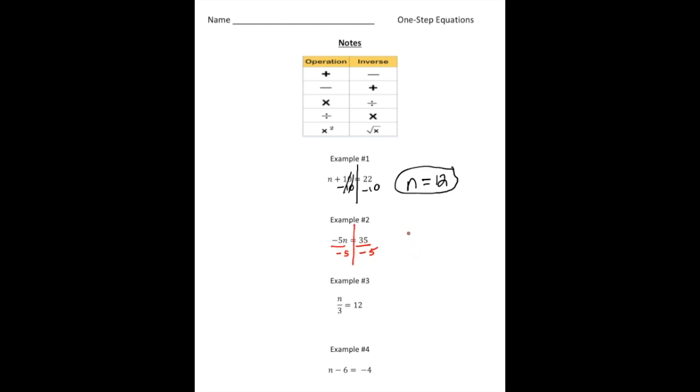And now when we do that, n is going to equal, well, first of all, these negative 5s cancel out. So that's how we get the n by itself. And 35 divided by negative 5 is negative 7. So again, the opposite of multiplying was dividing. And that's how we got the answer, negative 7.